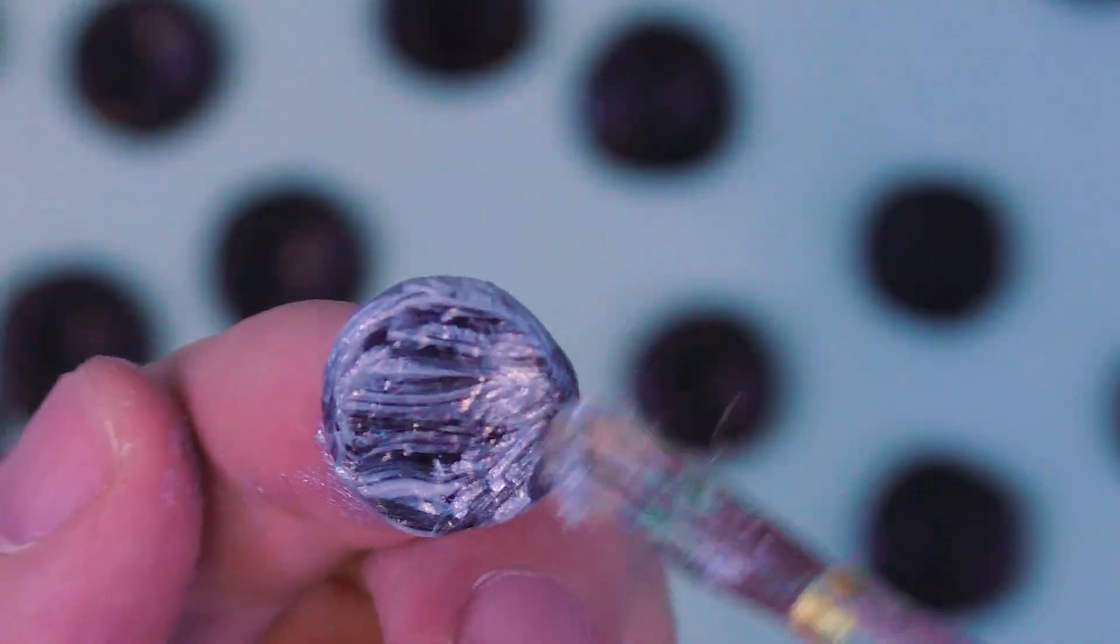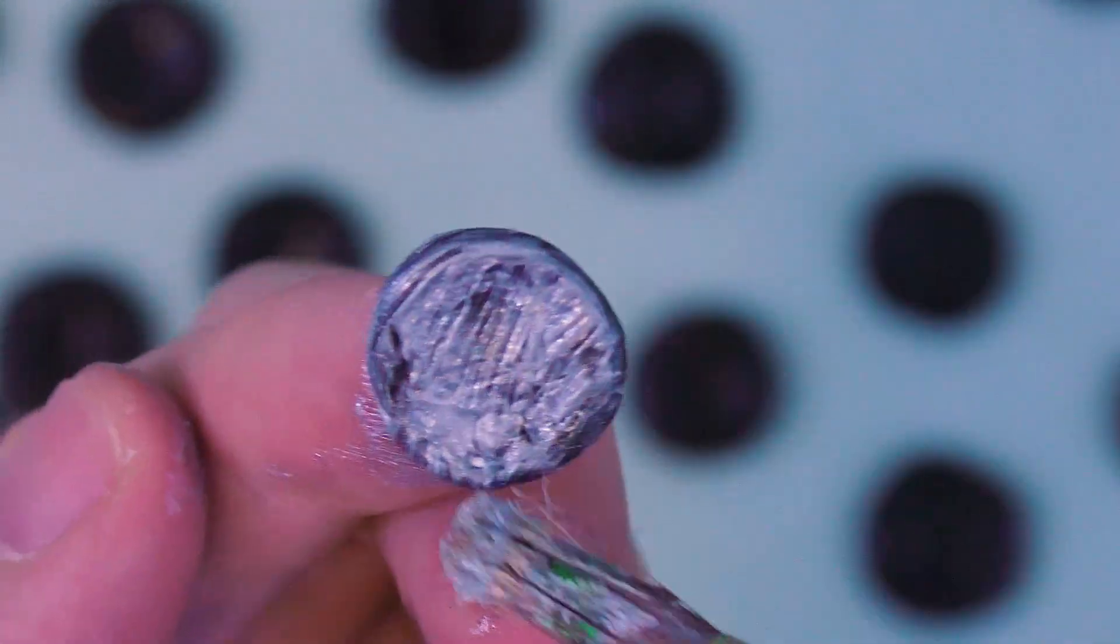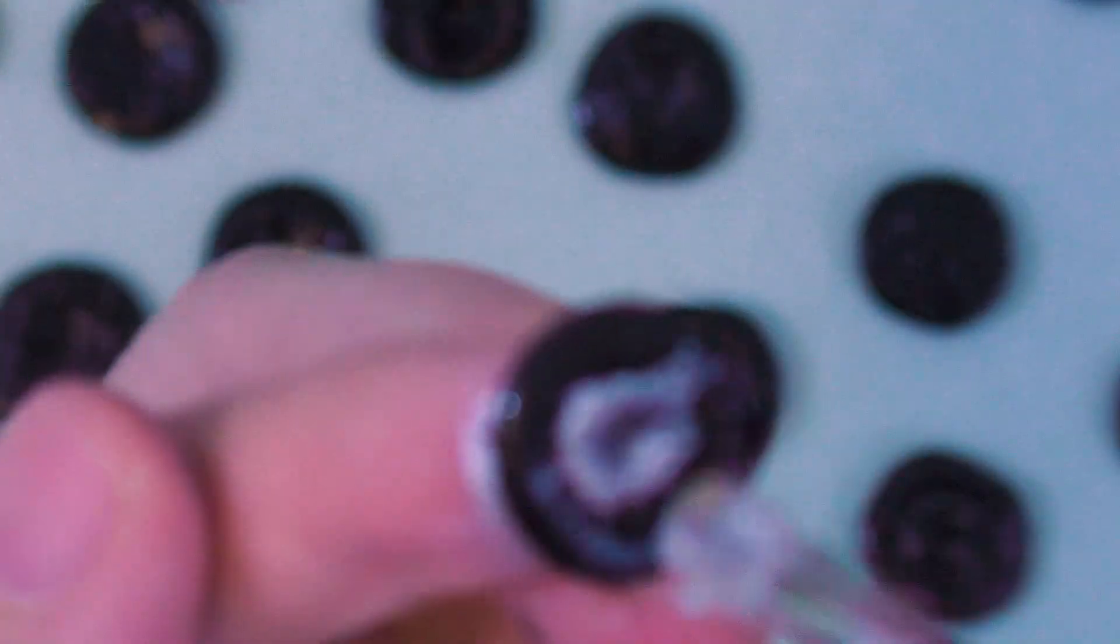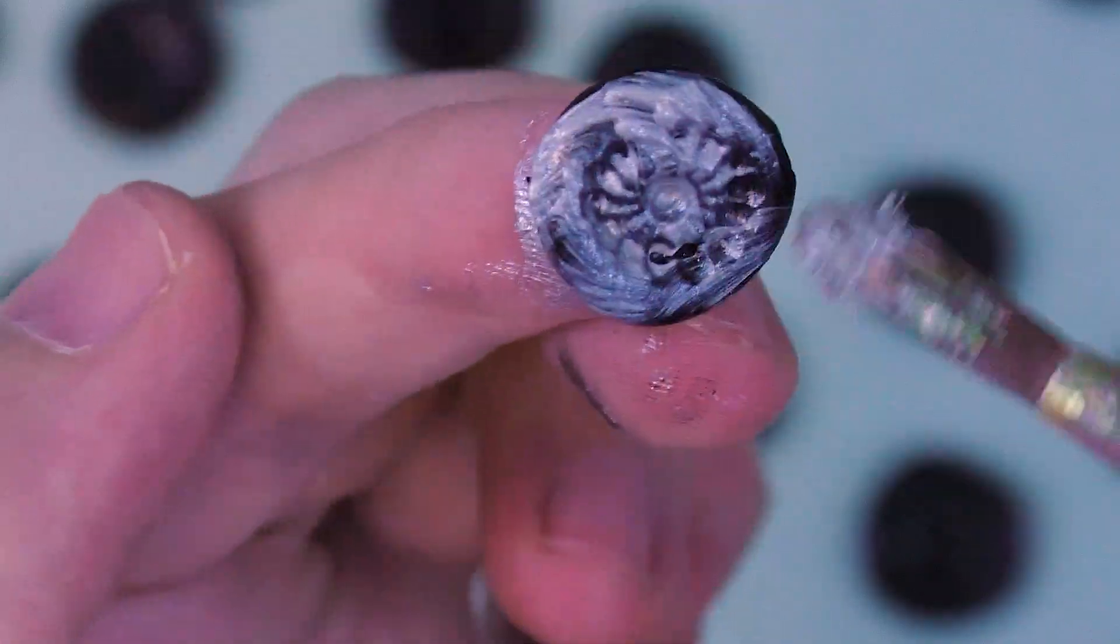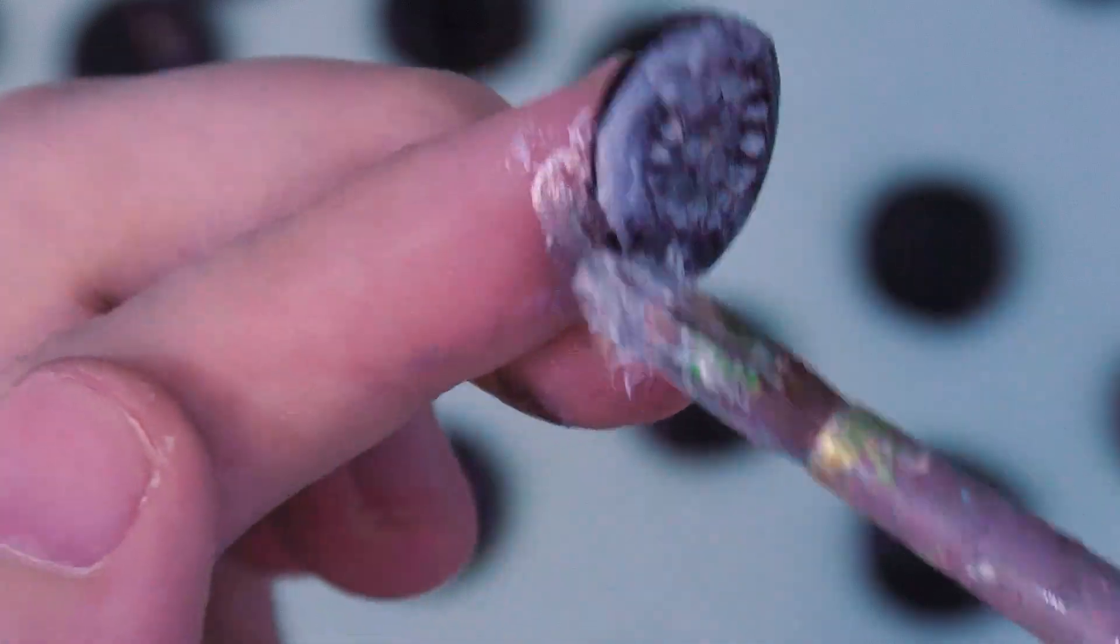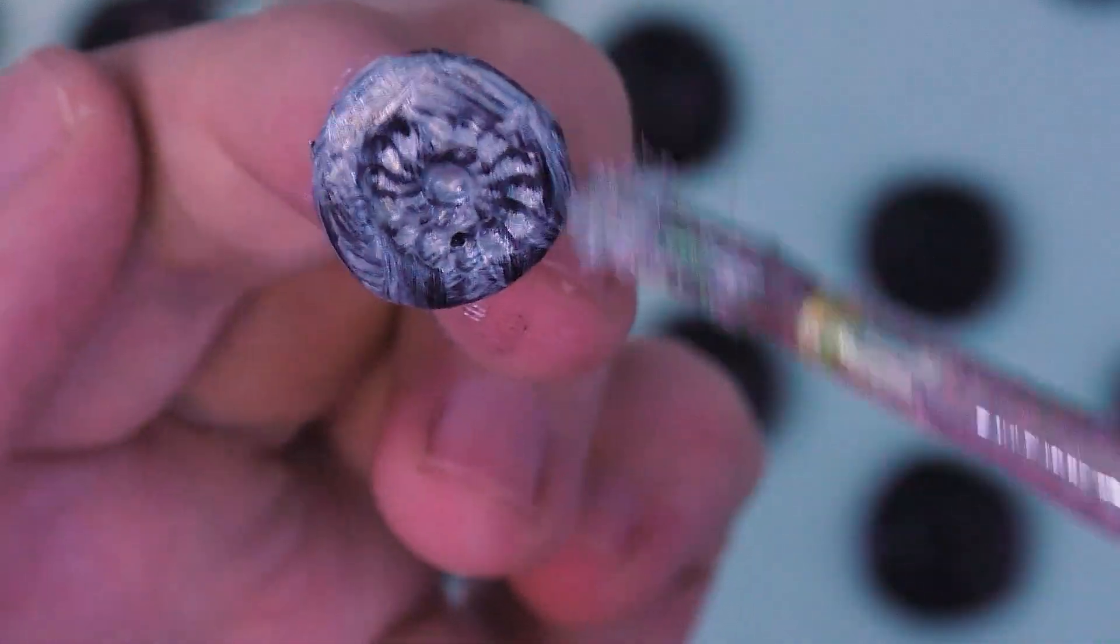I'm not even being particularly careful to hit every nook and cranny of the coin because if you let some of the black show through, it'll look like a bit of a patina, like there's some age to it and the coin has some history to it.